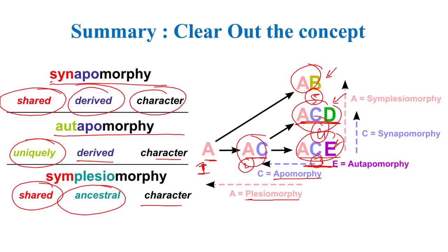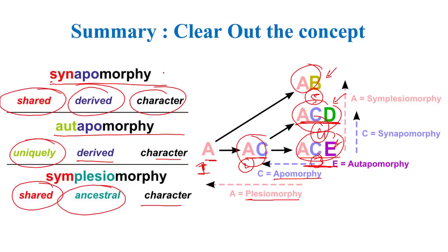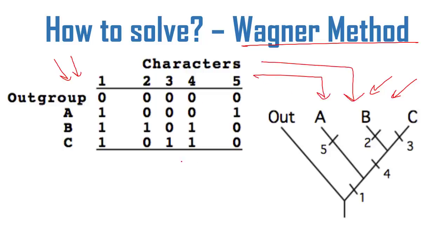Now let's move to math problems — how to solve cladogram problems. The problems you will get are either represented as a data set of numbers, or a cladogram is provided directly. If the cladogram is provided, you find the relationship between species. If a data set is provided, you construct the cladogram. The method we use is called the Wagner method — the easiest method. This data set represents a cladogram, and the Wagner method tells us how to construct it.